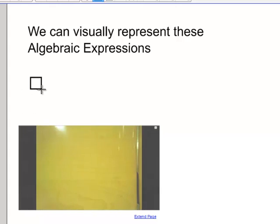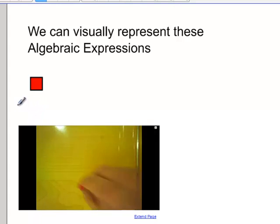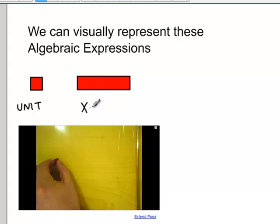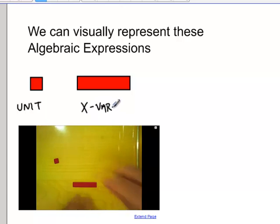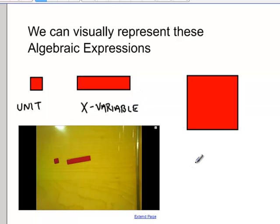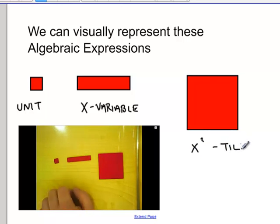We can visually represent different algebraic expressions. In the past you're probably used to working with algebra tiles. So a single red tile would be one unit. A long rectangular tile represents the variable x. And then a large square tile represents x squared.